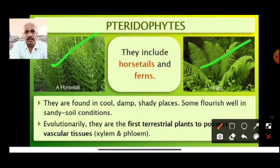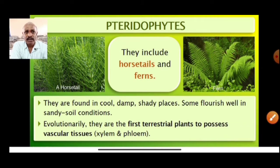Horsetails look like a horse tail. The other group is ferns. Usually they are found in cool, damp, shady places. Some flourish well in sandy soil conditions.